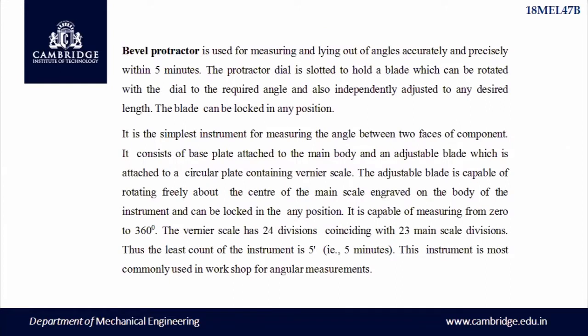Compared to normal protractors, this bevel protractor can measure angles within the level of minutes, whereas the normal protractor can only measure in degrees. It is the simplest instrument for measuring the angle between the two faces of a component. It consists of a base plate attached to the main body as well as the adjustable blade, which is capable of rotating freely about the center of the main scale. It can measure from 0 to 360 degrees — that is why it is called a universal bevel protractor. The vernier scale consists of 12 divisions on the right side and 12 on the left side, giving 24 total divisions.